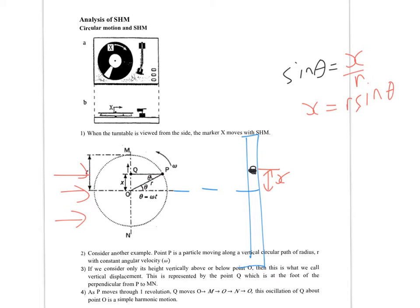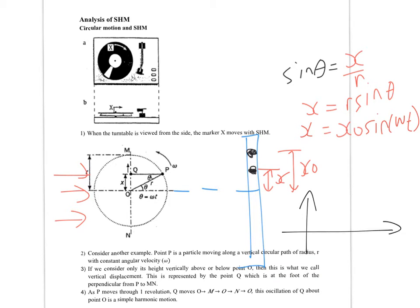Since r equals the amplitude x₀, we replace r with x₀. The angle theta is angular displacement starting from the middle, which equals ωt from circular motion. So the displacement equation for starting from the middle is x = x₀ sin(ωt). Since this is a sine function, the x versus t graph is a sine graph.